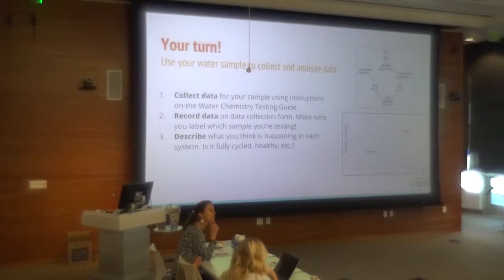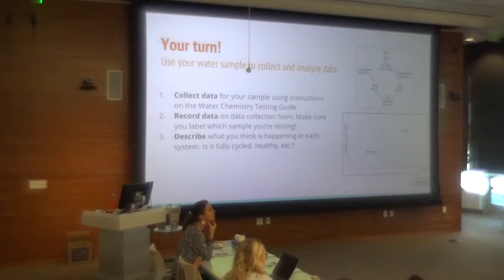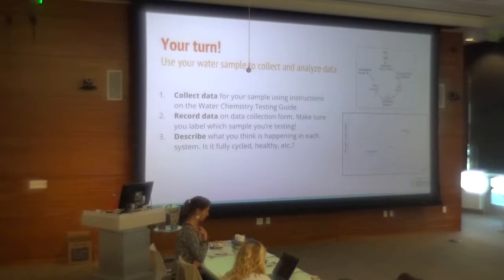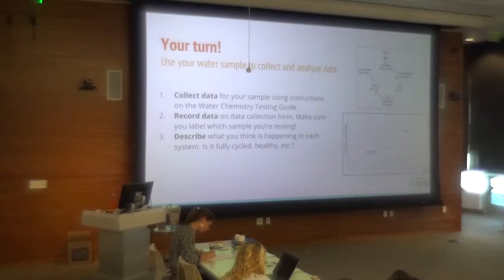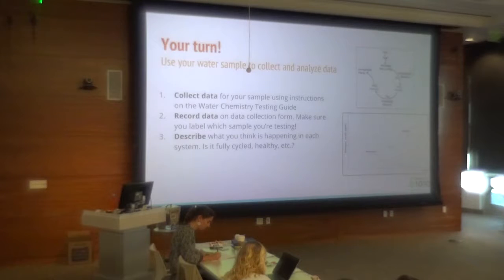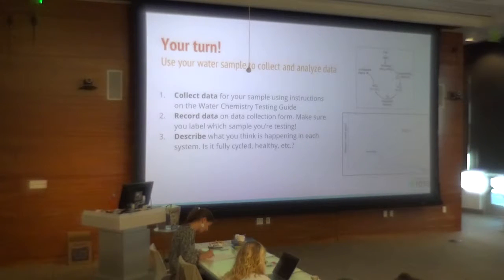Let's think about test strips and collecting water chemistry data. What do you think are the positives of using test strips versus using a digital reading, like having a probe that goes in the water and gives you a digital reading? What are some advantages or disadvantages of using test strips? There's some user bias — you have to decide how long to keep it in the water and decide exactly what color it is. One person might think it's one color and another person might think it's a slightly different color.